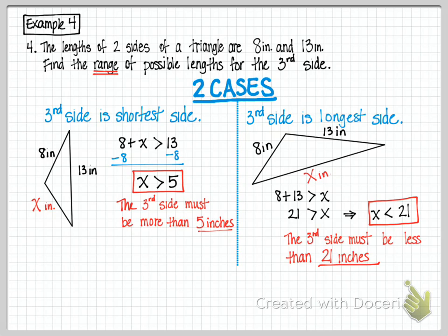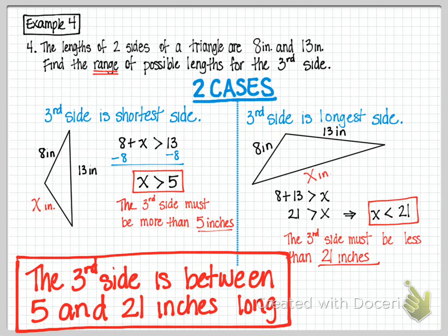Well, in the first case, when it's the shortest side, it's got to be more than 5. In the second case, when it's the longest side, it's got to be less than 21. Well that implies that the third side is somewhere between 5 and 21 inches long. That can be written as an inequality, and we can see that as an inequality. 5 is less than x is less than 21, and this is a way of writing it as an inequality, and it's a really nice way to write it. So, this is how you could write the range of the third side.